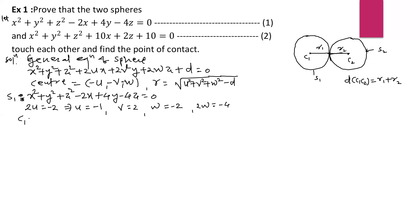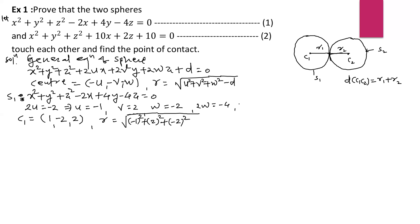The centre of the first sphere C1 = (−u, −v, −w) = (1, −2, 2). The radius r1 = √(u² + v² + w² − d) = √(1 + 4 + 4 − 0) = √9 = 3. So the radius of the first sphere is 3.